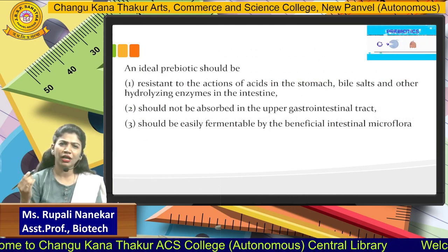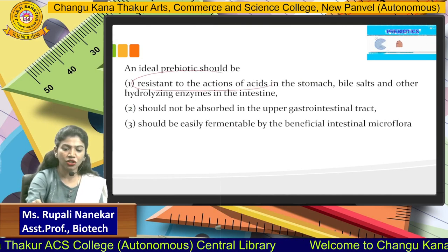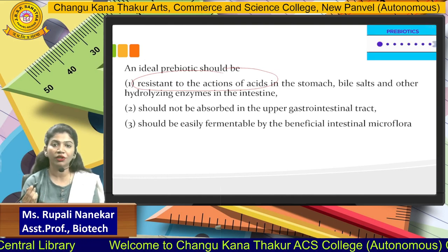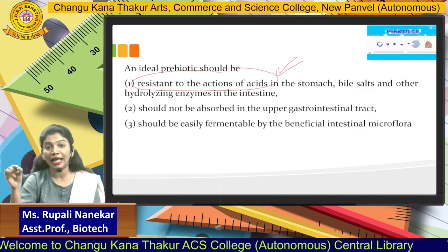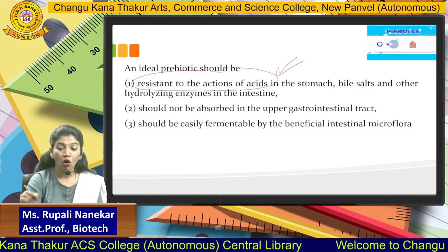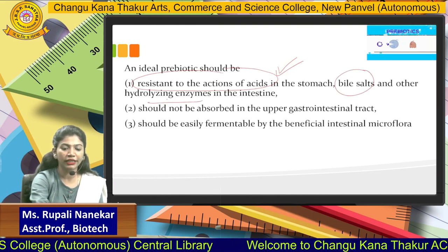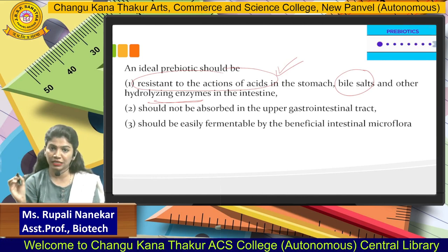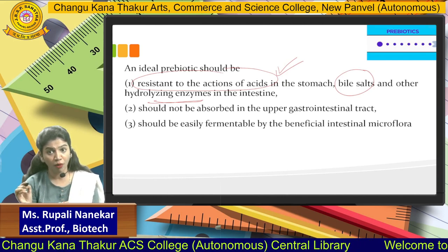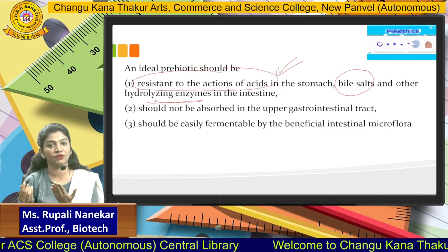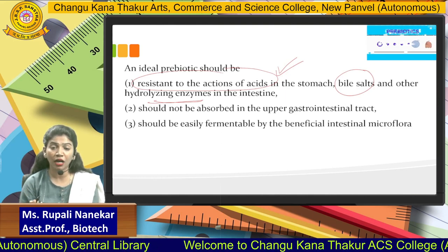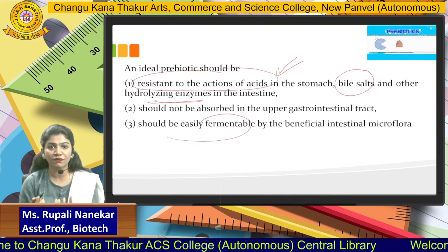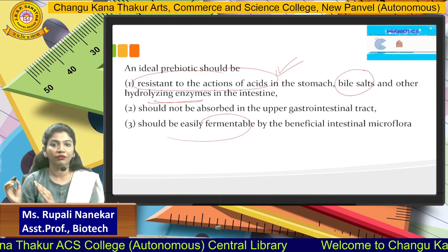An ideal prebiotic should have several properties. First, it should be resistant to the action of acids — since we have a lot of gastric juices and enzymes in our stomach that degrade substances, prebiotic must resist them. It should also be resistant to bile salts and other hydrolytic enzymes; otherwise there is no use in consuming it. Second, it should be absorbed or adsorbed in the upper intestinal gastrointestinal tract, including the large colon, small intestine, large intestine, colon region, and stomach. Third, it should be easily fermentable — fermentation leads to byproducts and helps grow the natural gut flora, which is the main motive.